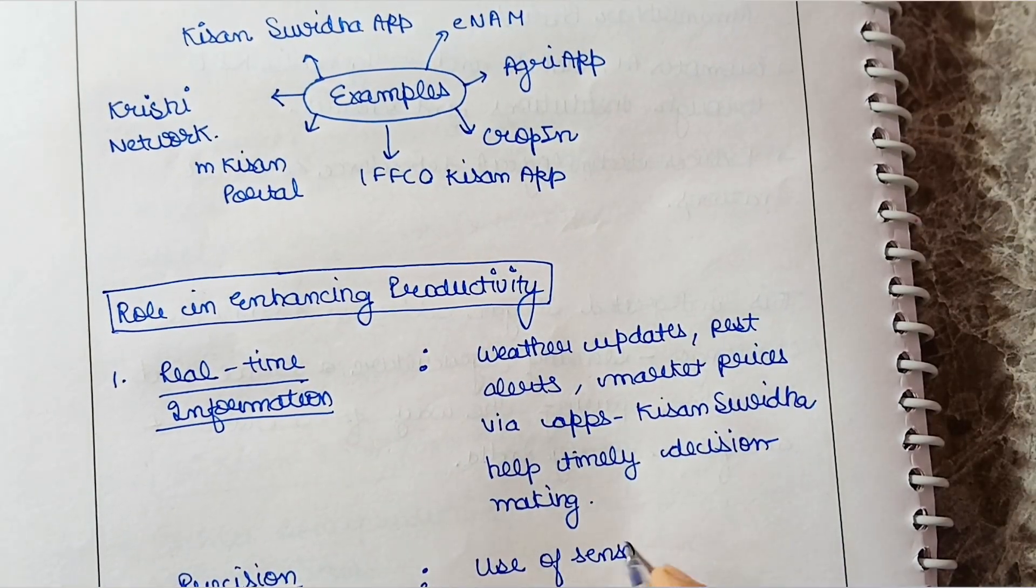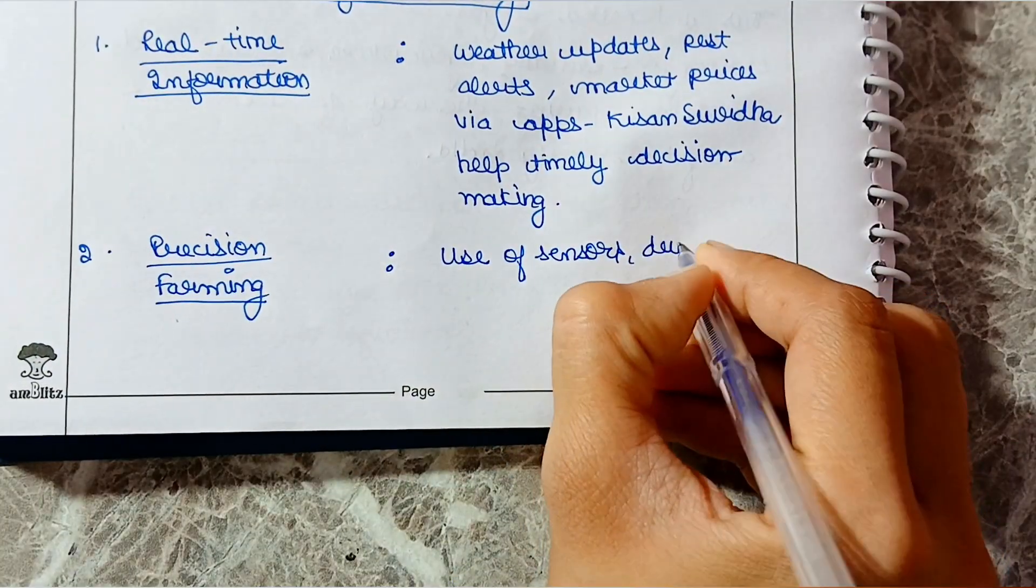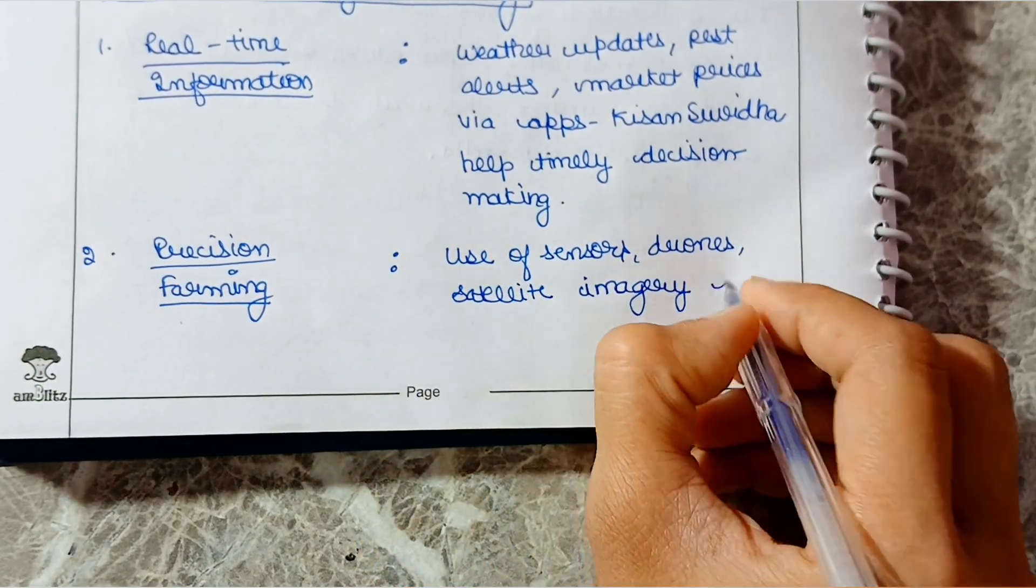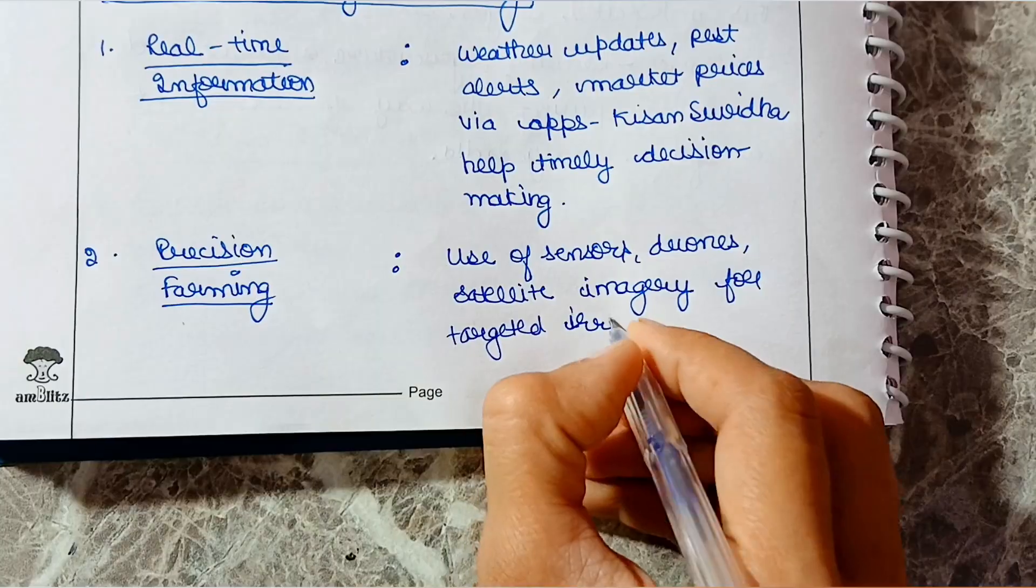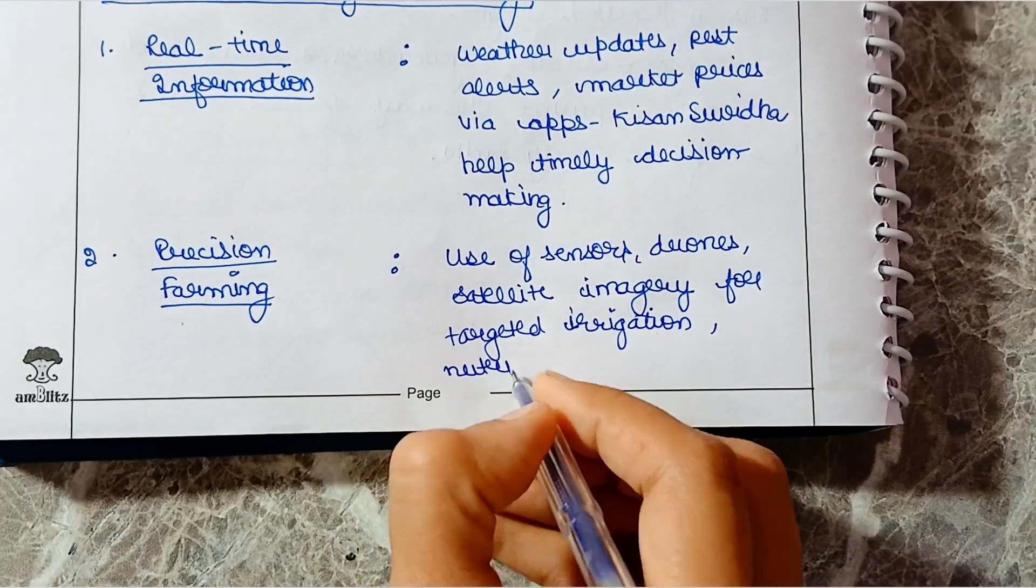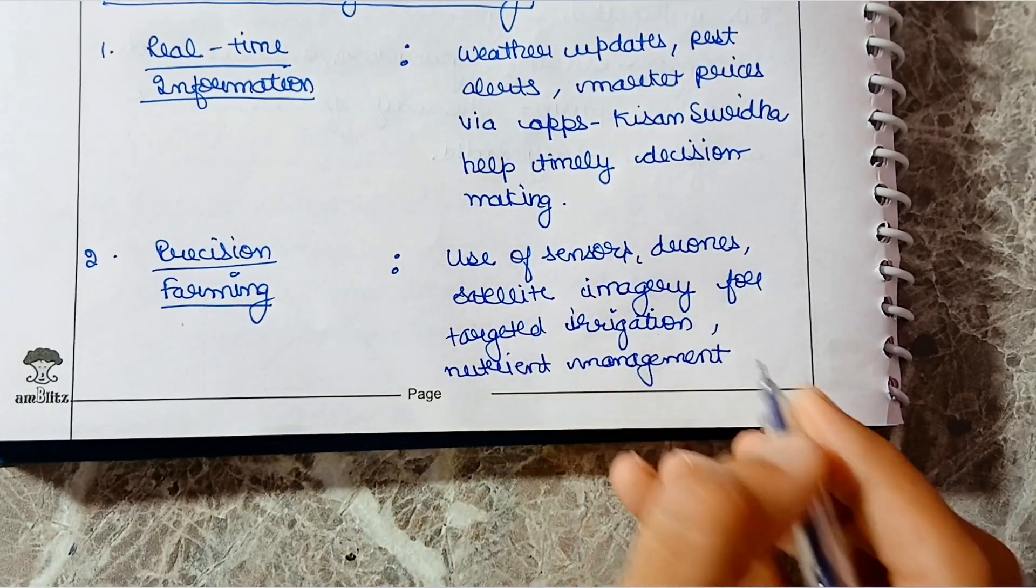Second point is precision farming: use of sensors, drones, satellite imagery for targeted irrigation, nutrient management.